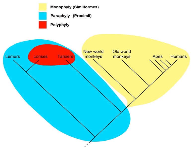By comparison, the term paraphyly, or paraphyletic, uses the ancient Greek prefix para, meaning beside or near, and refers to the situation in which one or several monophyletic subgroups are left apart from all other descendants of a unique common ancestor.